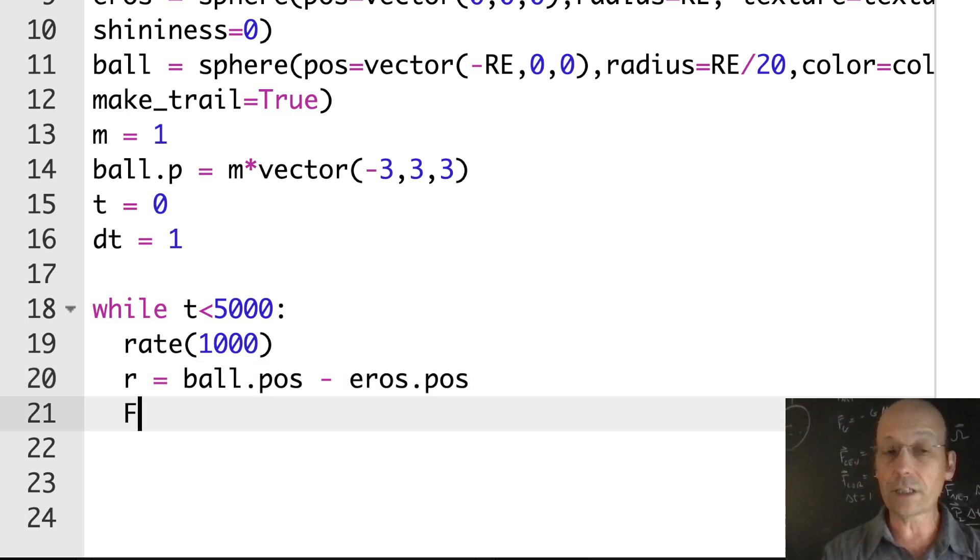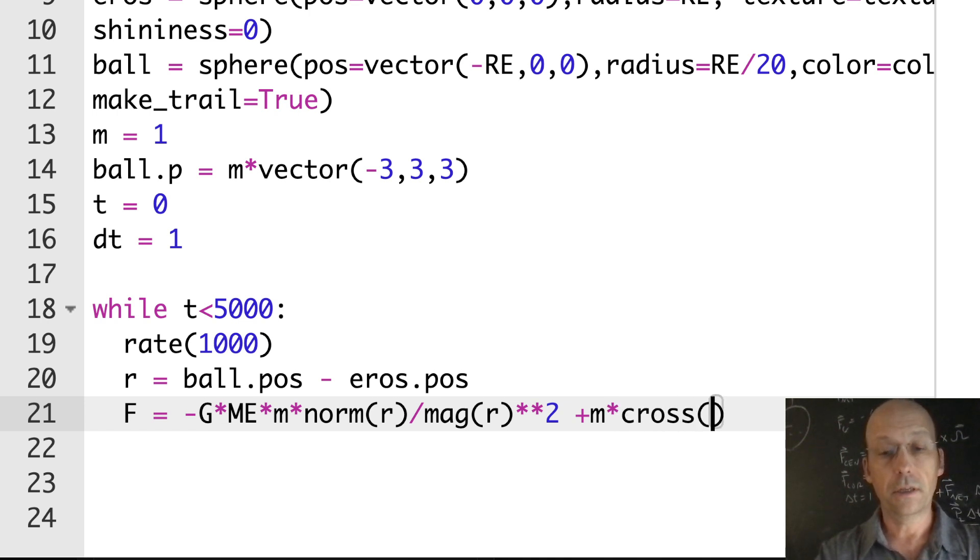Let's go ahead and calculate the net force. I'm just going to call it F. It's going to be the gravitational force: negative G times ME times m times norm r divided by mag r squared. Norm r is a unit vector r hat, and mag returns the magnitude of the vector.